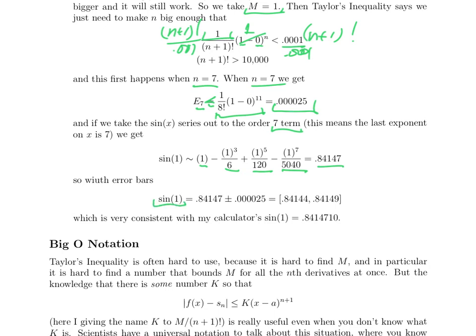When I plug in 1, I get 0.84147. So with error bars, that says sine of 1 is 0.84147 plus or minus 0.000025. That's the interval I get, and my calculator, just to see if it's reasonable, falls happily inside that interval.